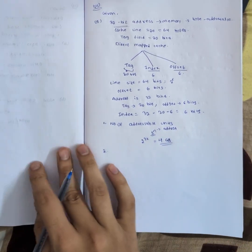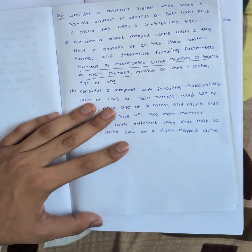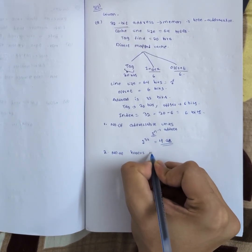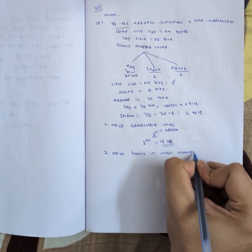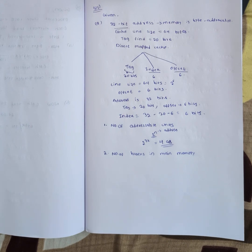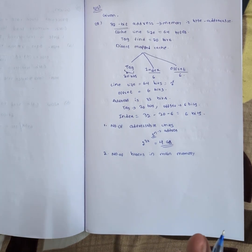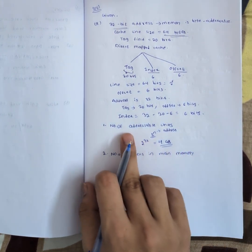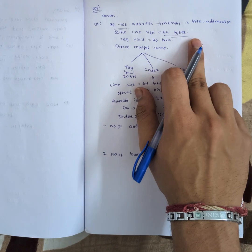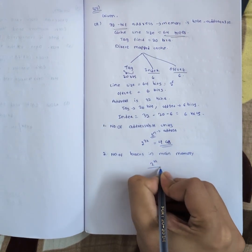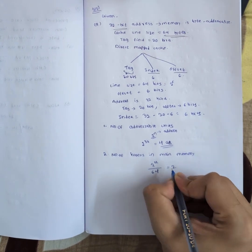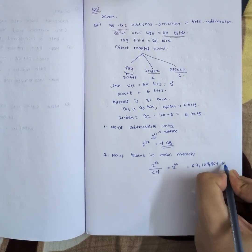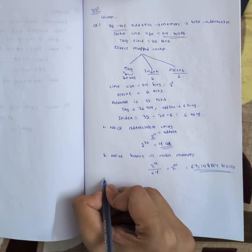Second: number of blocks in main memory. Each block is 64 bytes (the line size). So number of blocks = number of addressable units divided by block size = 2 power 32 divided by 64 = 2 power 32 divided by 2 power 6 = 2 power 26, which equals 67,108,864 blocks. Writing 2 power 26 is sufficient.